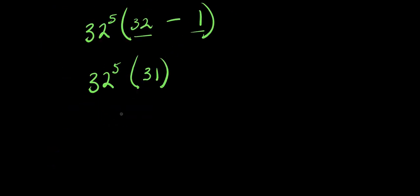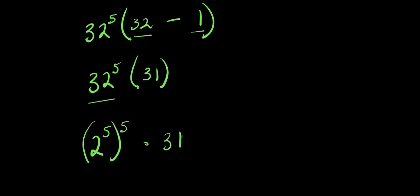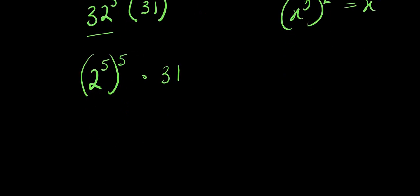Right now I can express 32 as 2 to the power 5, so I have (2^5) raised to the power 5, times 31. Using the rule that x to the power y raised to the power z equals x to the power yz, we multiply 5 times 5 to get 25. So we have 2 to the power 25 times 31.